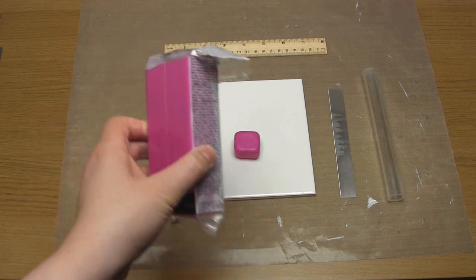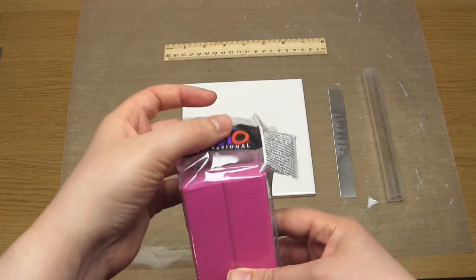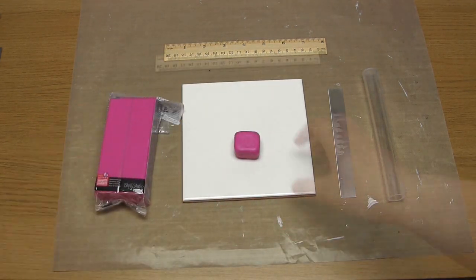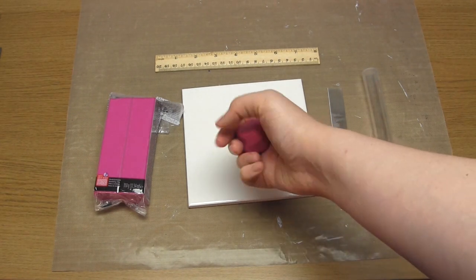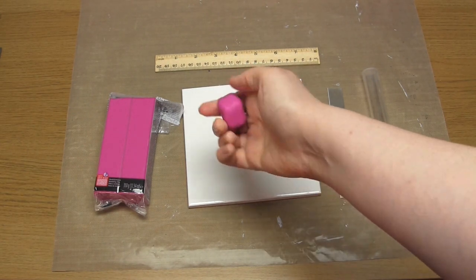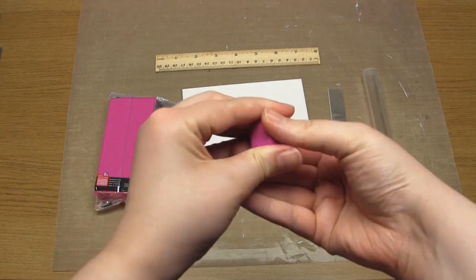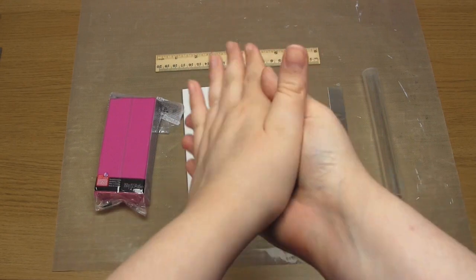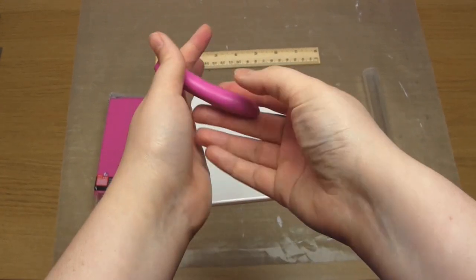To make these feet from polymer clay, you first need to condition the clay. Conditioning the clay is simply where you're working it to warm it up and to make it more pliable. I personally use some magenta Femo clay, but you could use any color or brand.